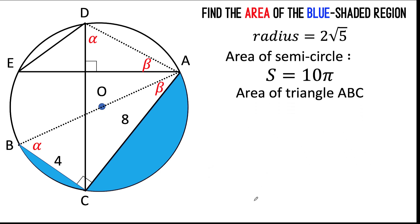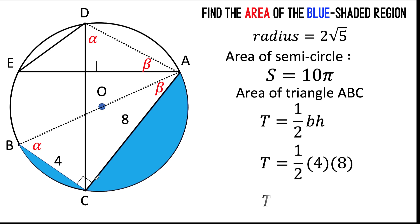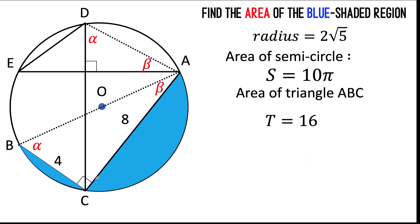Now let's find the area of triangle ABC. Its base is 4 and its height is 8. The area is one-half base times height. Therefore, the area of triangle ABC is 16 square units. Let's remember this result also.